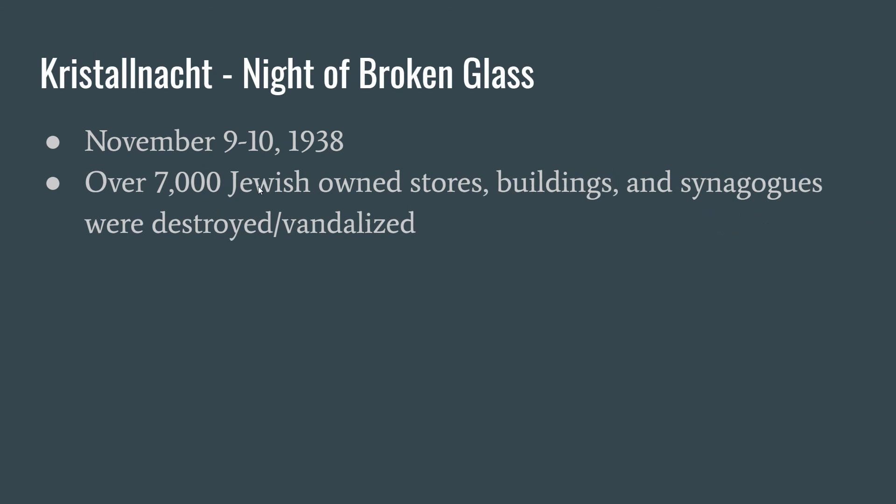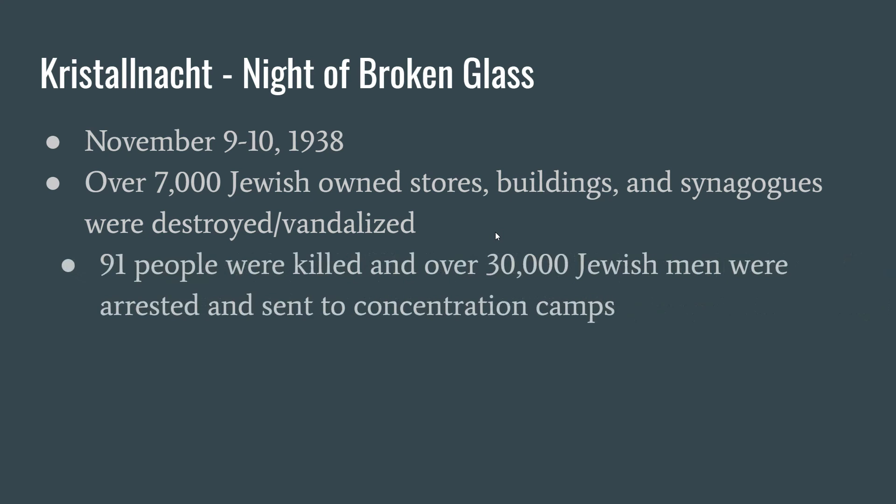Then we come to Kristallnacht, where things got violent. Kristallnacht is the German word for 'night of broken glass.' This was November 1938, about a year before World War II started. Over 7,000 Jewish-owned stores, buildings, and synagogues were destroyed or vandalized. 91 people were killed, and over 30,000 Jewish men were arrested and sent to concentration camps.